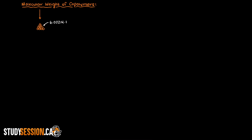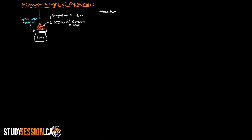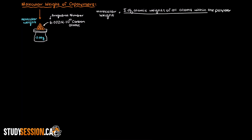If we remember back to some of our earliest chemistry classes, we are taught about the molecular weight of various atoms, which is typically given on the periodic table as grams per mole. This means that when you have an Avogadro's number of atoms, we have a certain weight of those atoms or compounds. We can write that the definition for the molecular weight of a given species is the sum of the atomic weights of all the atoms within the polymer per mole.